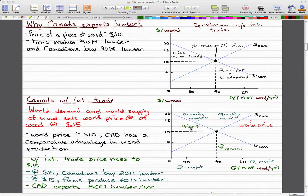With the world price being greater than $10, which is our price before there was international trade, we see that Canada actually has a comparative advantage in wood production.